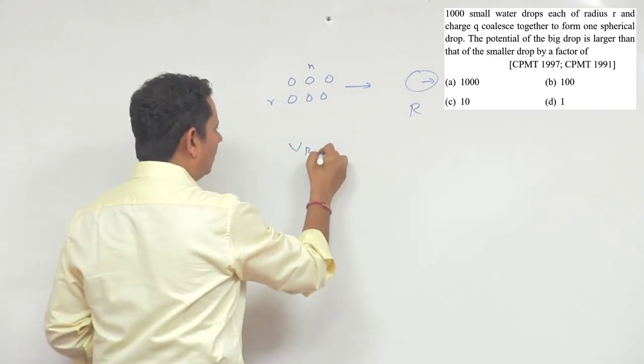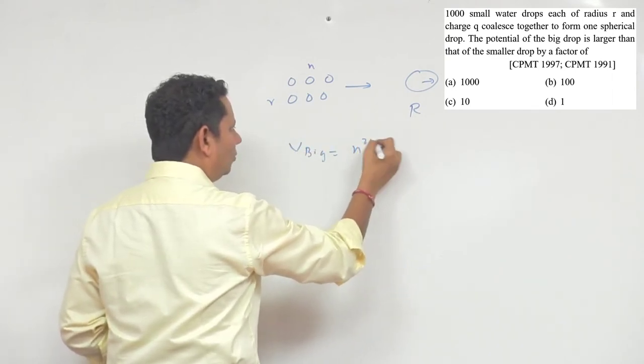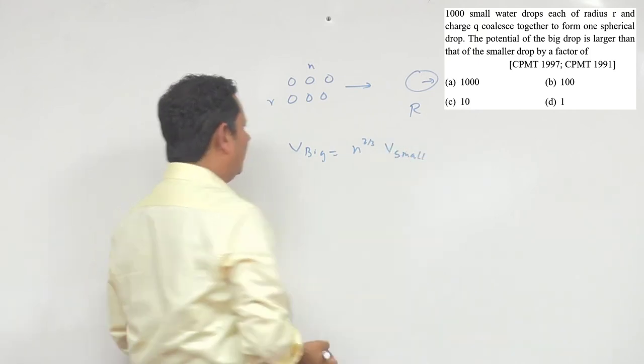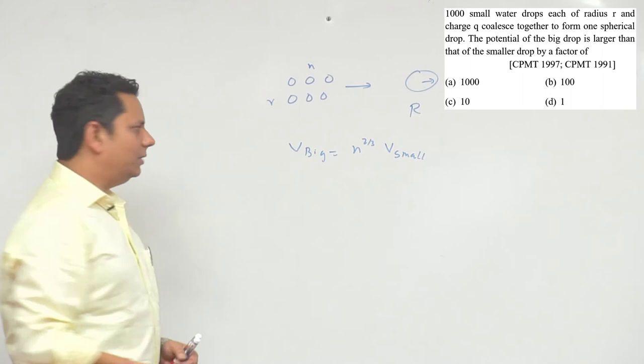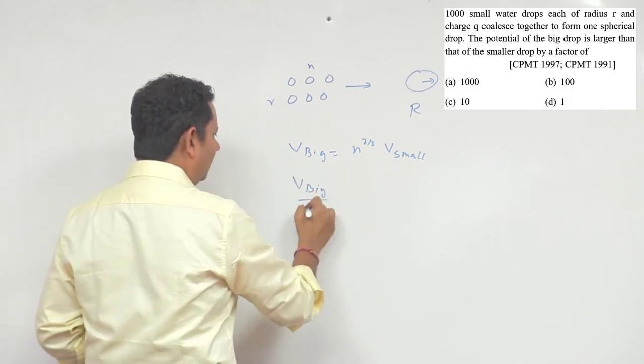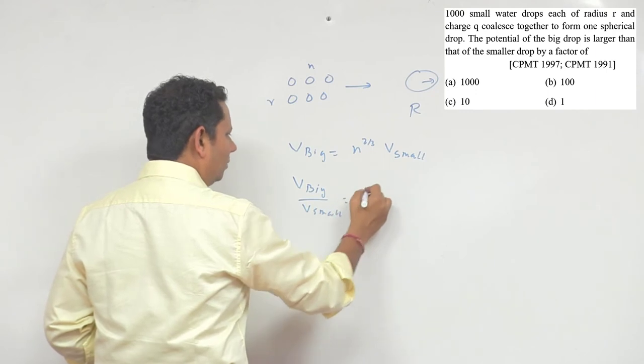The potential of the big drop will be equal to n to the power 2/3 multiplied by the potential of the small drop. So we can use this direct formula. The potential of big divided by potential of small will be